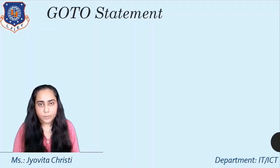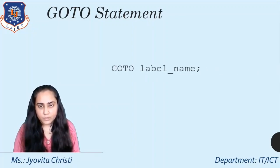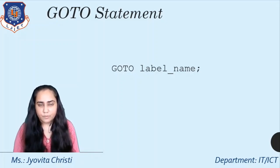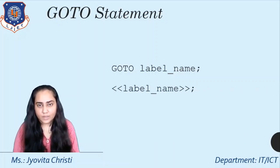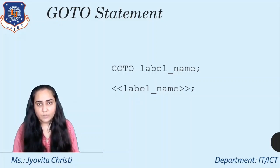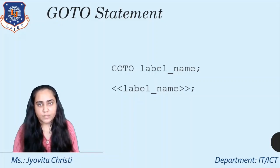The GOTO statement allows you to transfer control to a labeled block or statement. This is the syntax of the GOTO statement. The label name is the name of a label that identifies the target statement. In the program, you surround the label name with double angle brackets as you can see here. When PL/SQL encounters a GOTO statement, it transfers control to the first executable statement right after the label that you put in.